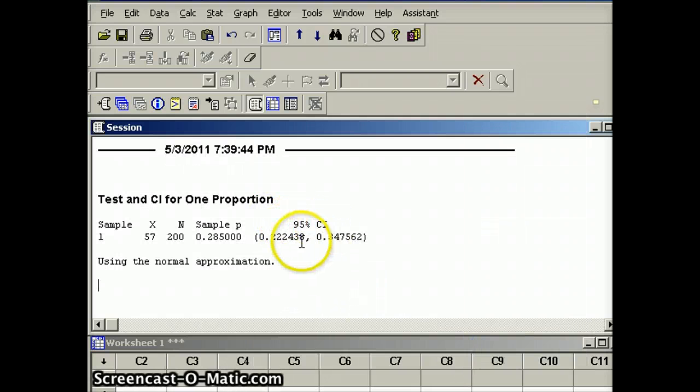And you'll see your 95% confidence interval from 0.2224 to 0.34756, which is very close to the numbers that we had using our formula.